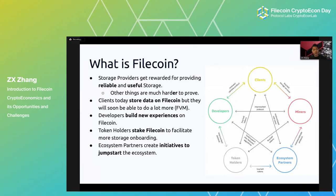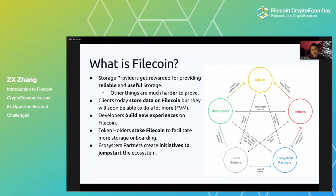Here's a stakeholder diagram of different participants on the Filecoin network. Storage providers provide reliable and useful storage and get rewarded by the blockchain for it. We could incentivize other things as well in a decentralized manner, but other things are much harder to prove. Clients today can only store data on Filecoin, but will soon be able to do much more when user-defined EVM smart contracts come to Filecoin. Token holders stake Filecoin, which is another big opportunity, and ecosystem partners create initiatives to jumpstart the ecosystem.